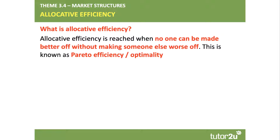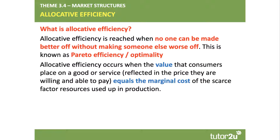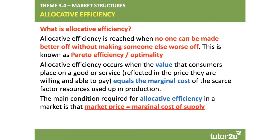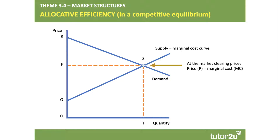It's a situation where no one can be made better off without making somebody else worse off — also known as Pareto efficiency or Pareto optimality. We're trying to use our scarce resources to get the maximum total benefits to both consumers and producers. Allocative efficiency occurs when the value consumers place on a good or service is reflected in the price they're willing and able to pay — when that value equals the marginal cost of the scarce resources used up in production. In competitive markets, the main condition required for allocative efficiency is that the market price equals the marginal cost of supply.